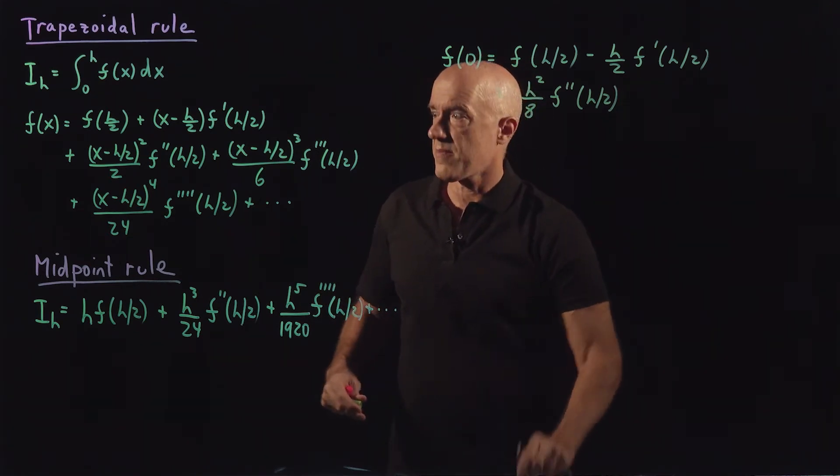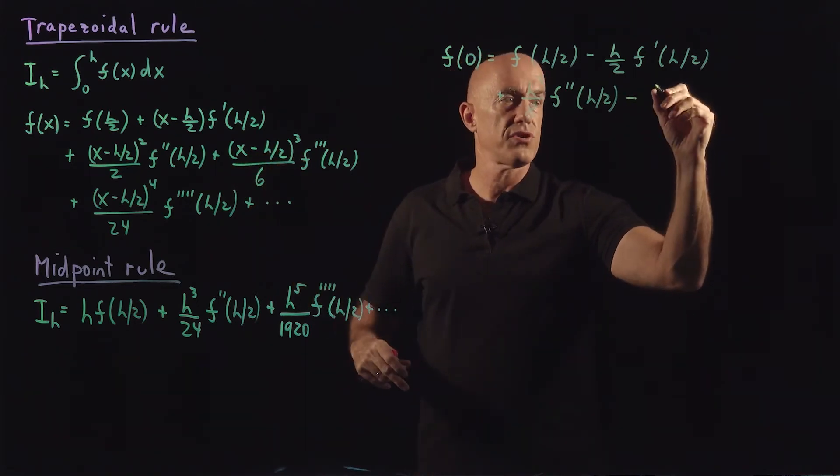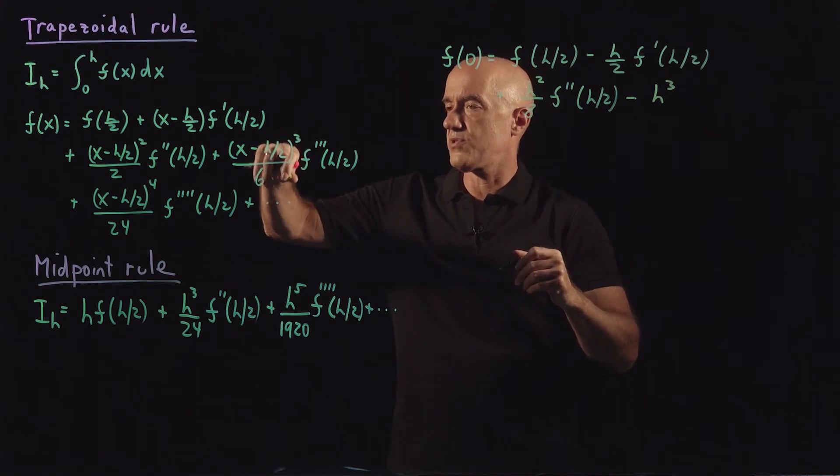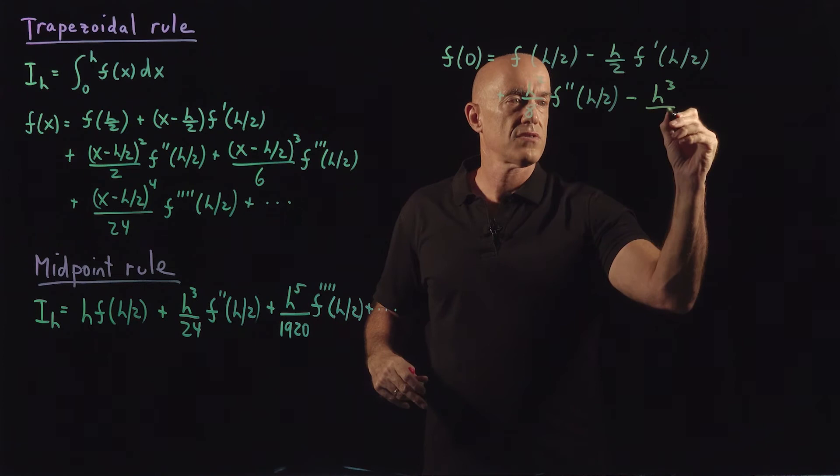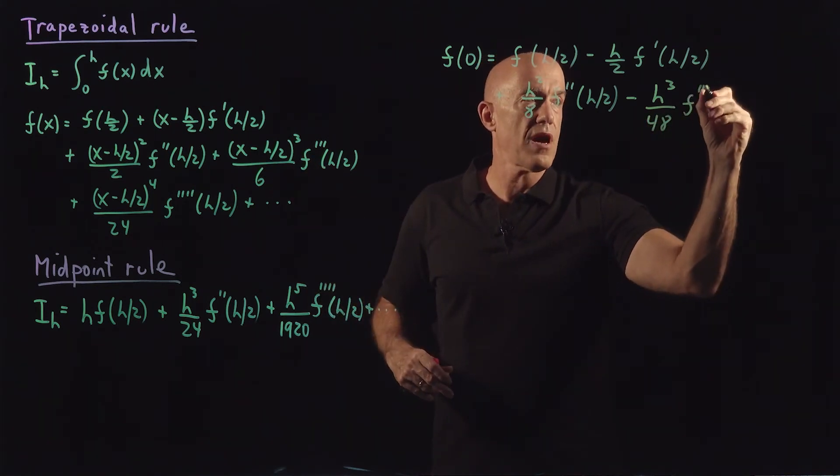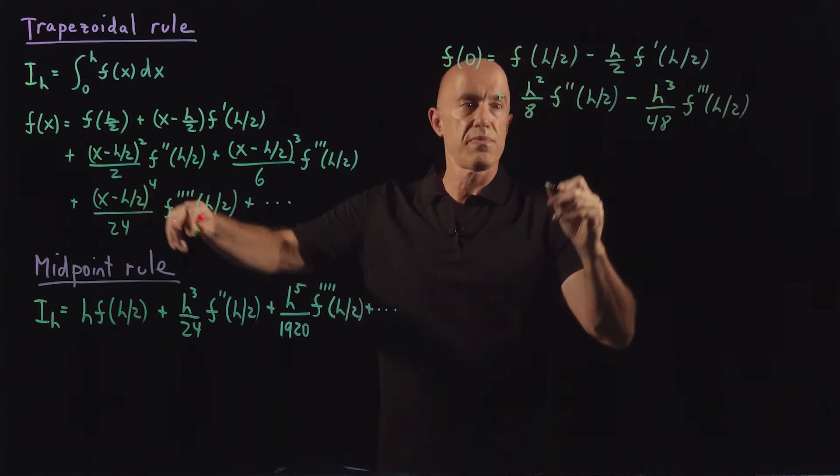And then we have h cubed, and then we have 2 cubed, which is 2, 4, 8 times 6, so 48 of f triple prime of h over 2.